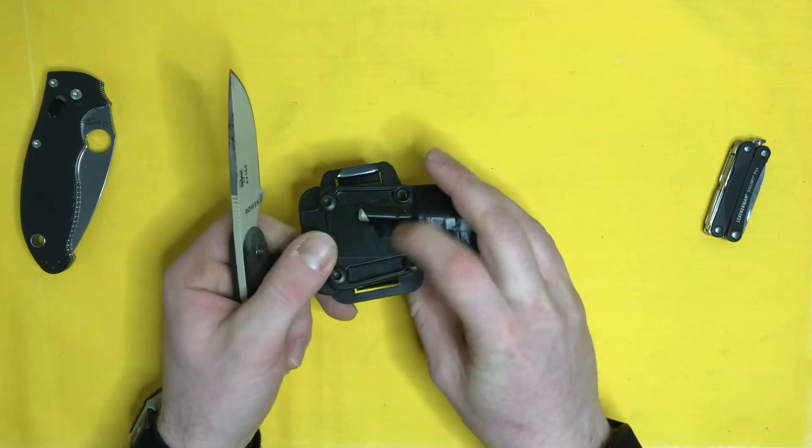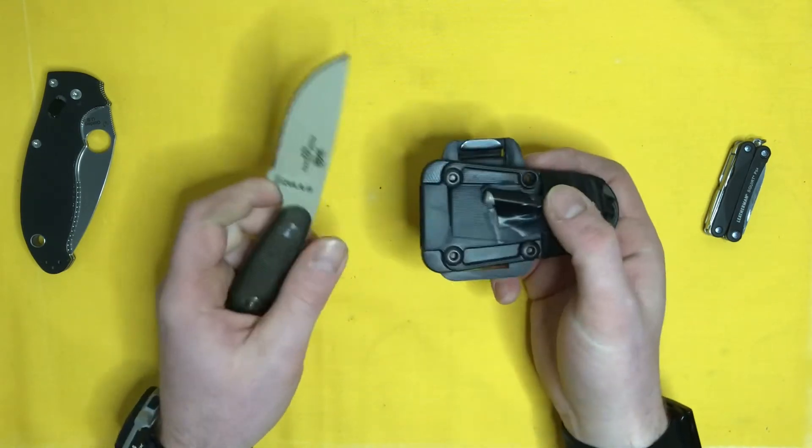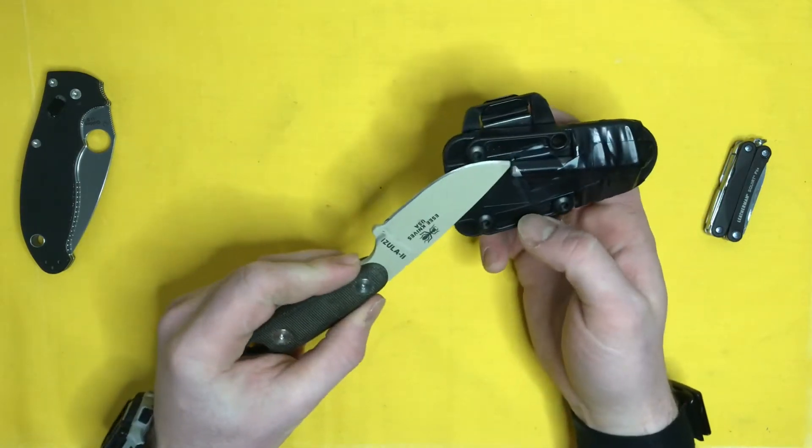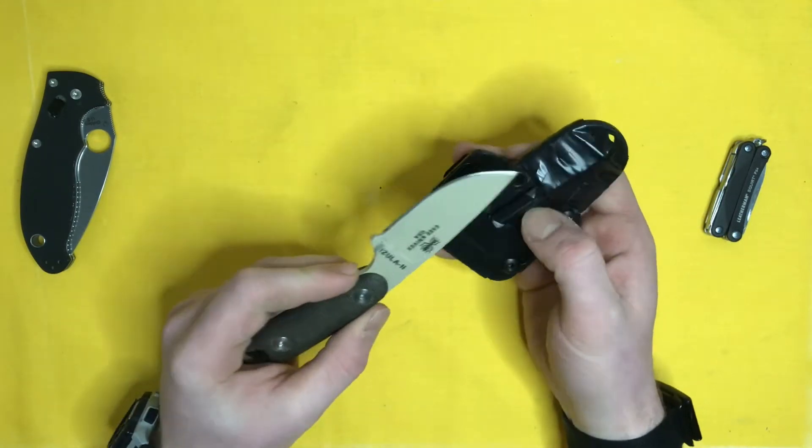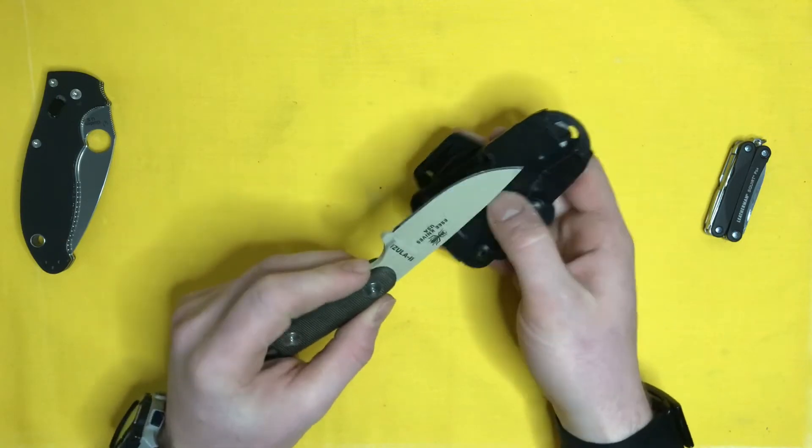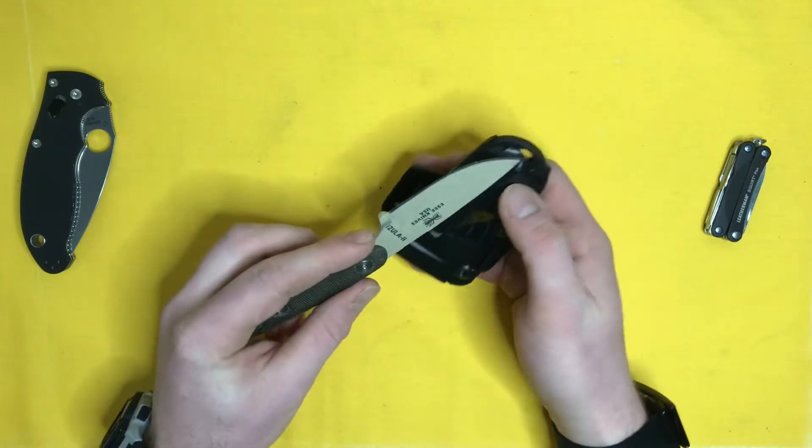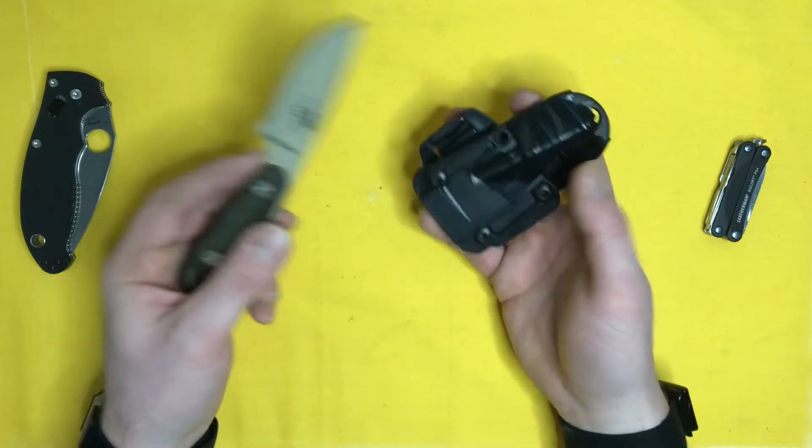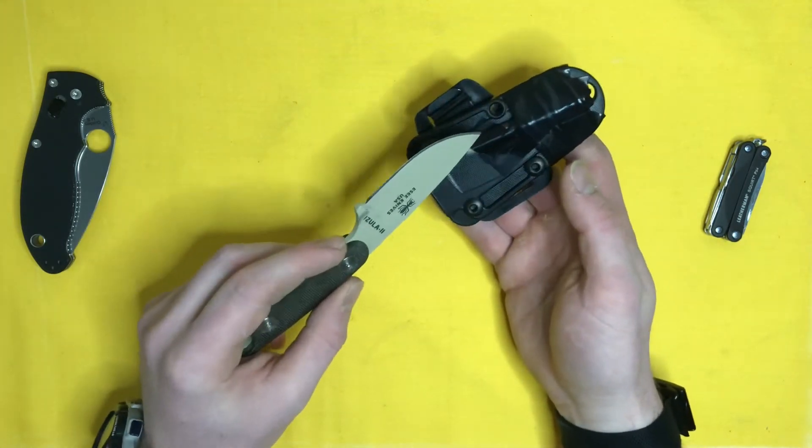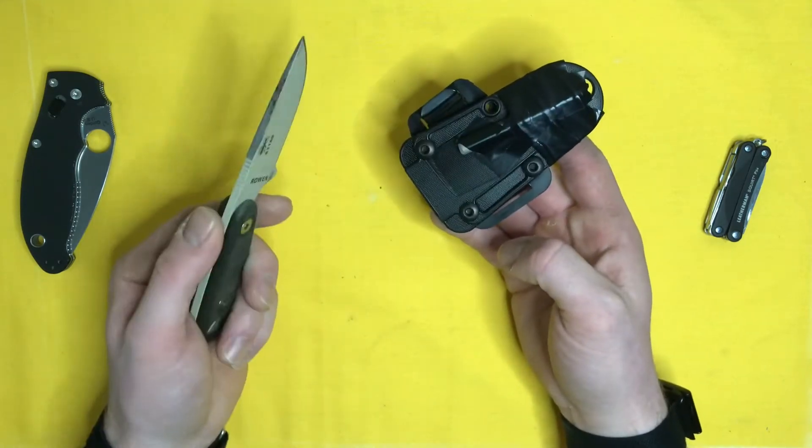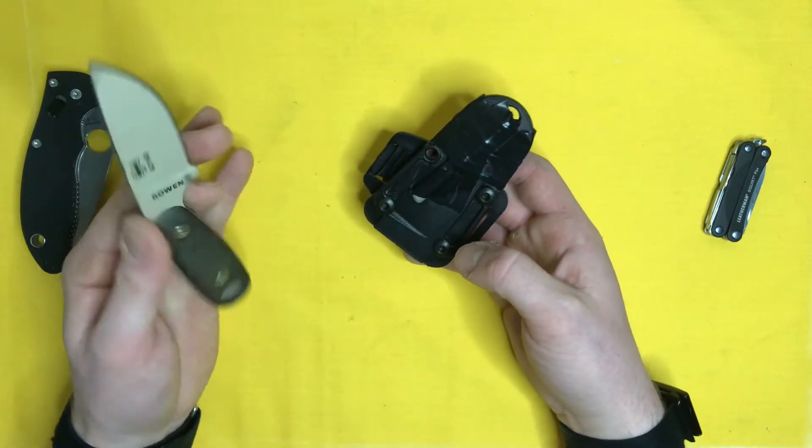And then I taped the fire steel that comes with the ESEE Azula kit just on the sheath here. So that gives me quick access. Well, not necessarily quick access, as it's taped pretty securely on there. But it's going to stay, hopefully, pretty preserved. I don't believe the adhesive is going to do any damage. I could just scrape that off. But the idea is, in an emergency situation, if I had this knife, I could get fire.